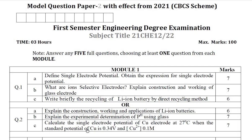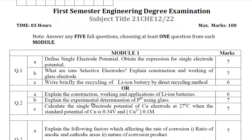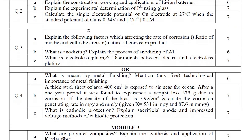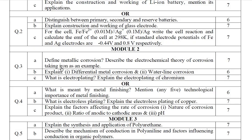Moving on to Module 2 — this is Module 2, which covers Corrosion and Metal Finishing. Question numbers 3 and 4 are from Module 2. Again, one compulsory problem will be there from Module 2 as well.